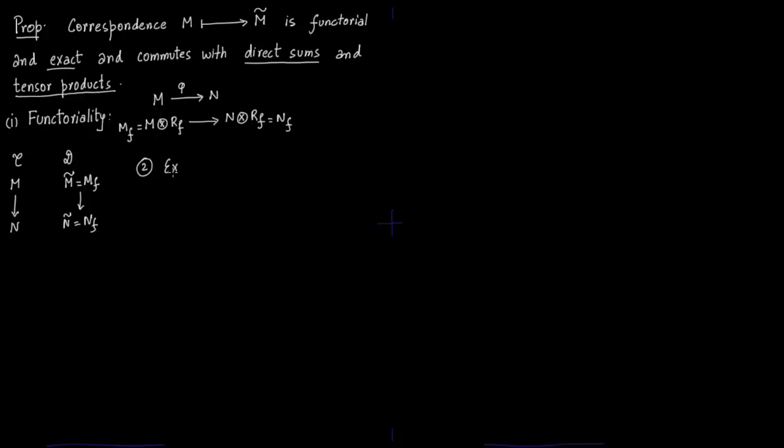Second is exactness. We have a short exact sequence: 0 to M' to M to M'' to 0, if and only if the sequence below is also exact. This is nothing but the fact that localization is an exact functor. This is commutative algebra - localization is an exact functor. First you do tensor product and then you say it is right exact, and then you do localization and you get the second sequence.